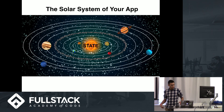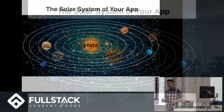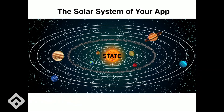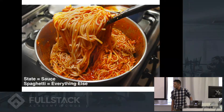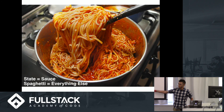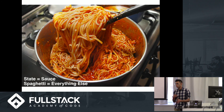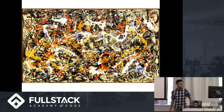So let's say you had to-do list items or Facebook posts and stuff — that would all be state, and your app would sort of revolve around it. Like state is the sun and your app is the solar system. The problem with state is that it's kind of everywhere for most things. It's like the sauce and the spaghetti, and the spaghetti is your app — it's just hard to disentangle from the rest of your application. It's like a Jackson Pollock painting.